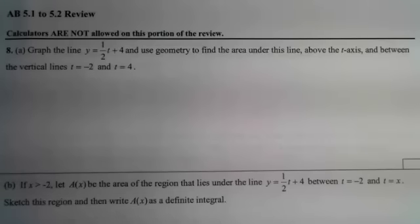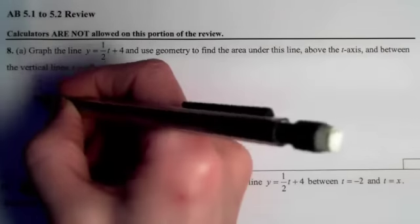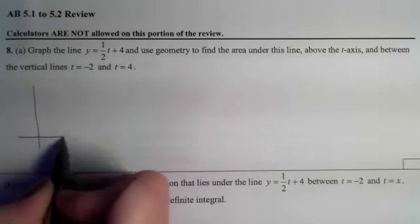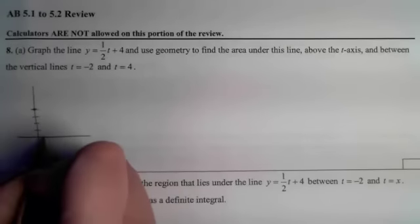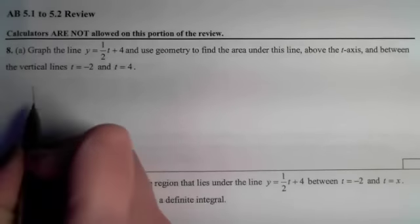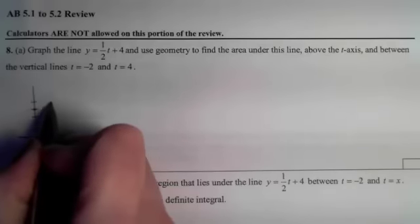First thing we're going to do is graph this line y equals 1 half t plus 4. We have a y-intercept of 4 and a slope of 1 half, so I'll go up 1 and over 2.